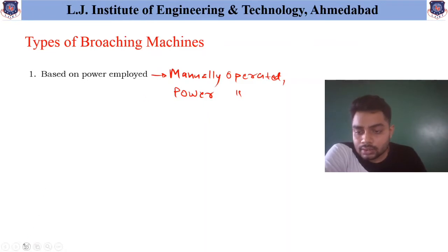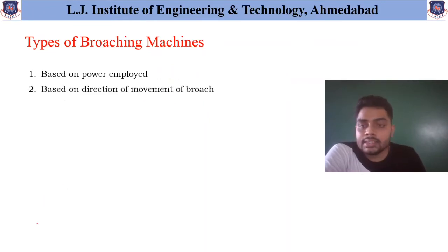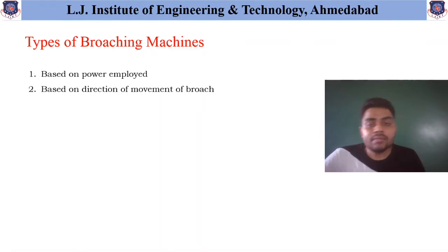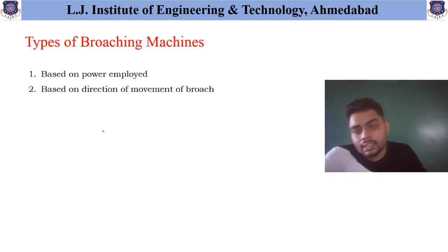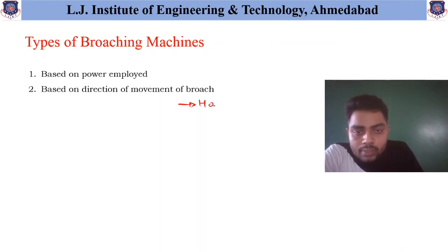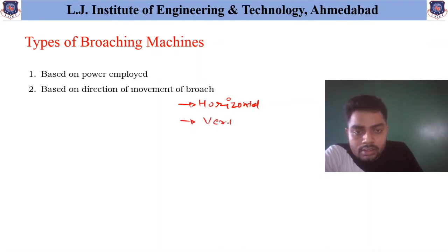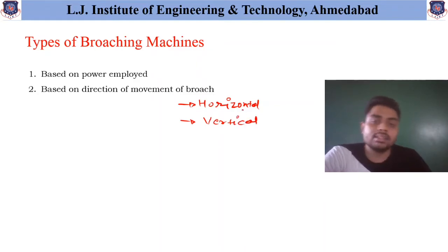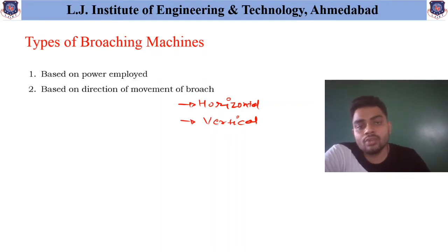Another way to classify is based on the direction of movement of the broach. Based on that, the broaching machine can be divided according to which direction the broach tool is moving — it may be moving in the horizontal direction or it may be moving in the vertical direction.